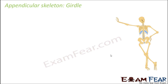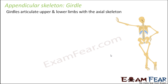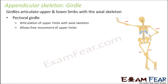This was about the limb bones. Now we will talk about the girdle. Girdles are parts of the body which connect the limbs to the axial skeleton — they articulate the upper and lower limbs with the axial skeleton. There are two types: the pectoral girdle, which articulates the upper limbs with the axial skeleton and allows free, flexible movement of the hands; and the pelvic girdle.